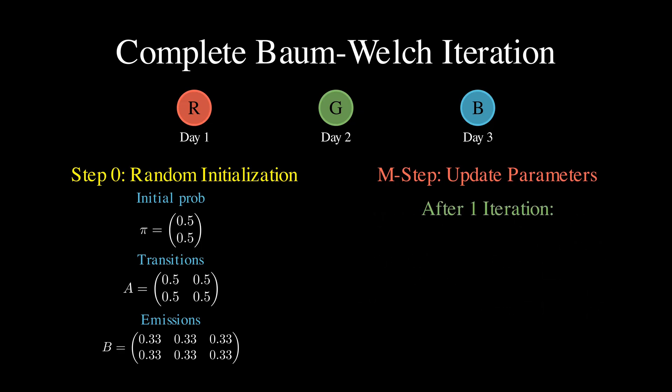After this first iteration, our parameters are already better than random, because they are now based on actual patterns in our observation sequence. Then we repeat the process. We run forward-backward again with our updated parameters to get new gamma and xi values. These new values will be different, because our parameters changed. Then we update our parameters again based on these new expected values.